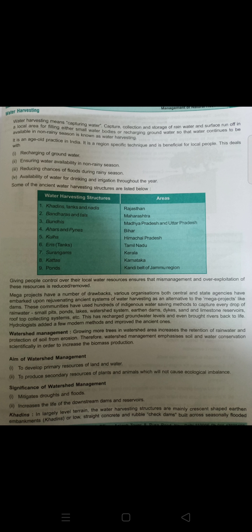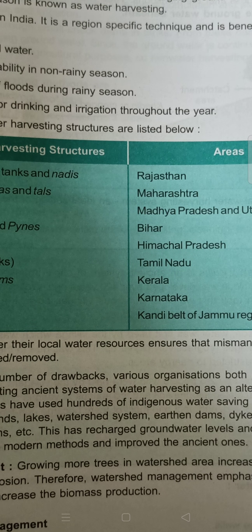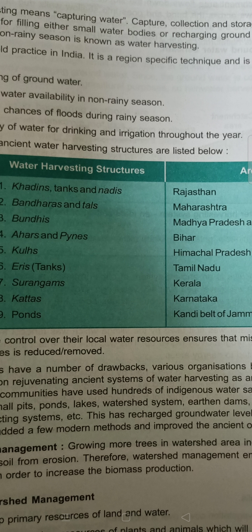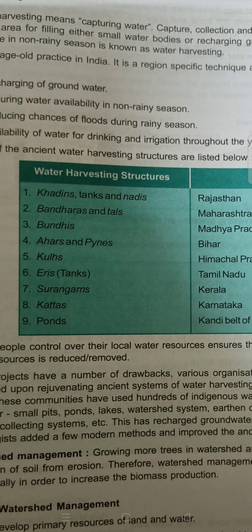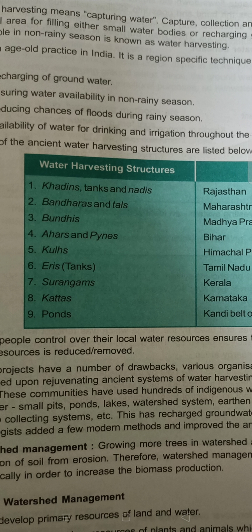Water harvesting is stored in different structures regionally. In Rajasthan, water is stored in the form of khadins, tanks, and nadis — these are the water harvesting structures of Rajasthan. In Maharashtra, the corresponding structures are bandharas and tals.